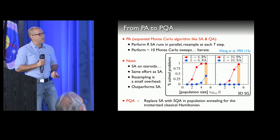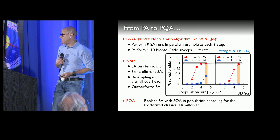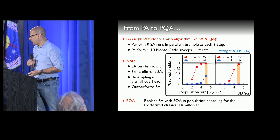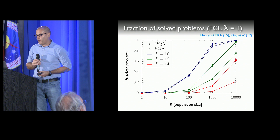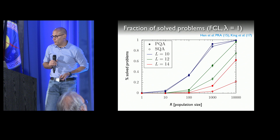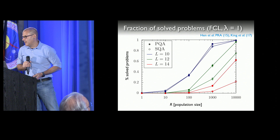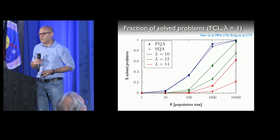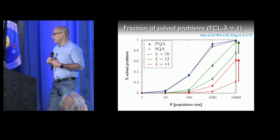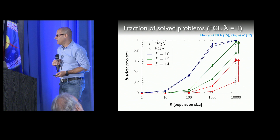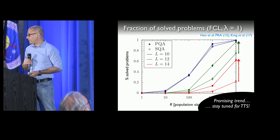The idea is simple: replace simulated annealing with simulated quantum annealing in this population annealing framework, using a Trotterized classical Hamiltonian. At this point I only have preliminary data. You see the fraction of solved problems as a function of population size for systems of 10-by-10, 12-by-12, and 14-by-14 frustrated cluster loops on Chimera lattices. For 10-by-10 the problems are a bit too easy, but at 12-by-12 and 14-by-14 with a large enough population size, there is a clear boost in the fraction of problems solved. The next step is to look at time-to-solution.